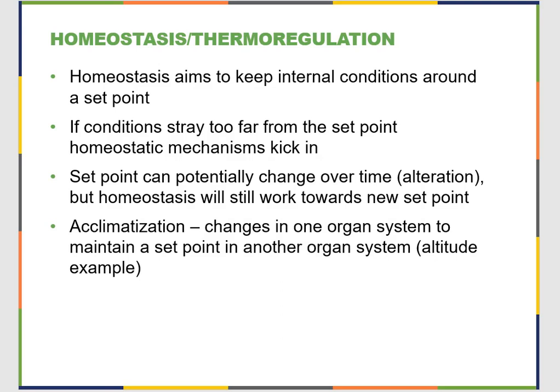When it comes to animal form and function, one big function is to maintain homeostasis — we need to maintain our temperature. Homeostasis aims to keep internal conditions around a set point; this applies not just to temperature but also to pH. Your body's pH needs to stay between 7.35 and 7.45 — anything outside of that makes you very sick very quickly. Solute concentration matters too: 'water drunk' means the body is hypotonic with not enough solutes, and when you're dehydrated your body is hypertonic with not enough water.